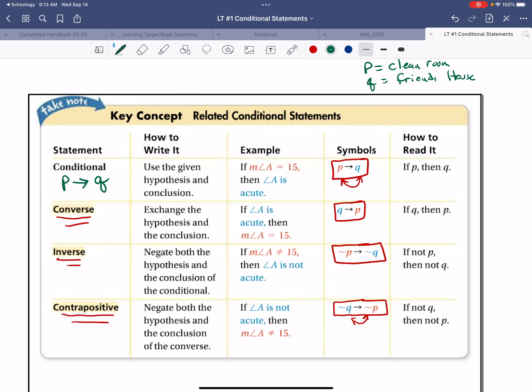The converse would be, if I go to my friend's house, then I cleaned my room. The inverse would be, if I don't clean my room, then I don't go to my friend's house. And the contrapositive would be, if I don't go to my friend's house, then I didn't clean my room. And so that would be an example of how these are used.